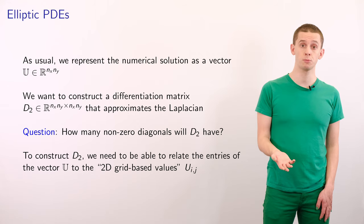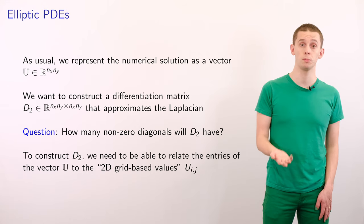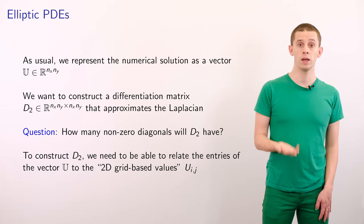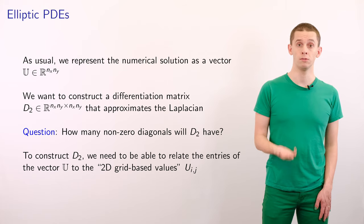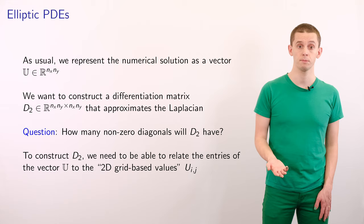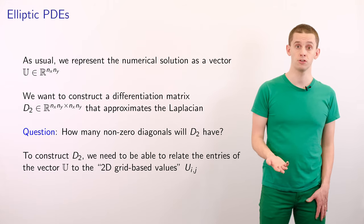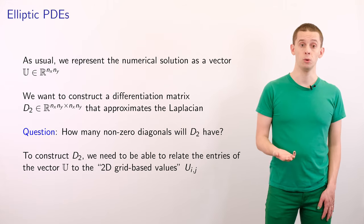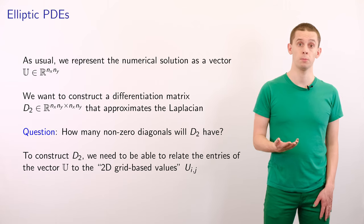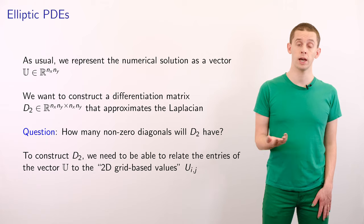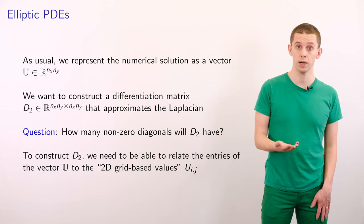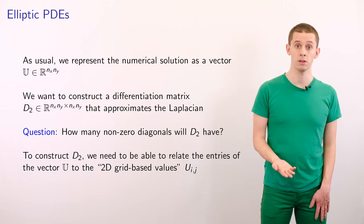Suppose our grid has nx points in the x direction and ny points in the y direction. Then we can represent our numerical solution as a vector u of length nx times ny. And we want to then construct a differentiation matrix D2 that will approximate our Laplacian. And we can ask ourselves how many non-zero diagonals will our matrix D2 have.